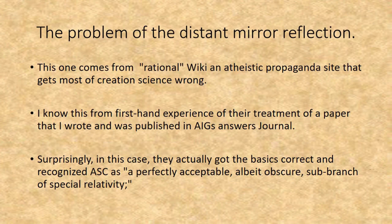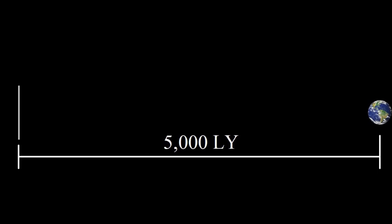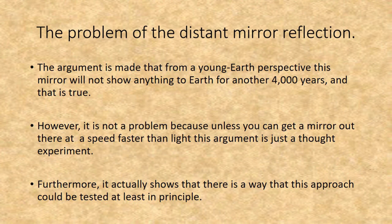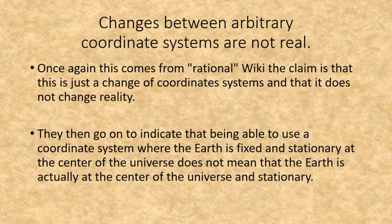This argument comes from Rational Wiki — an atheistic propaganda site that gets most of creation science wrong, as I know from first-hand experience with their treatment of a paper I wrote published in Answers in Genesis' Answers Journal. Surprisingly, in this case they actually got the basics correct and recognize ASC as a perfectly acceptable, albeit obscure, sub-branch of special relativity. The argument involves a hypothetical mirror 5,000 light-years away pointing so that it reflects light directly back at Earth. The argument is that from a young Earth perspective, this mirror would not show anything for another 4,000 years — and that is true — but it is not a problem, because unless you can get a mirror there faster than the speed of light, this is just a thought experiment. It does show there is a way this approach could be tested, at least in principle.